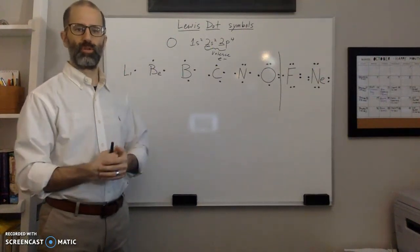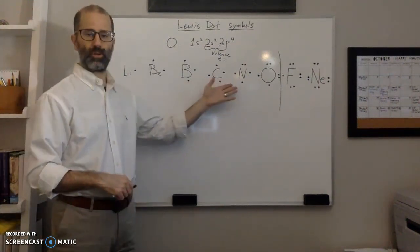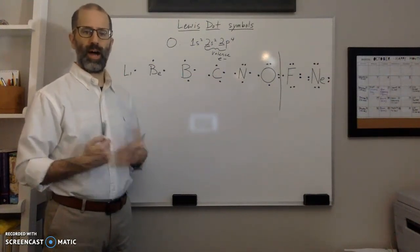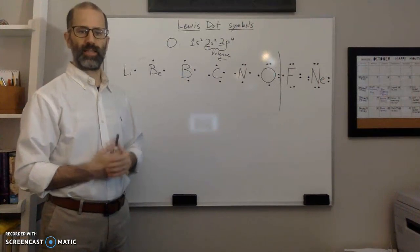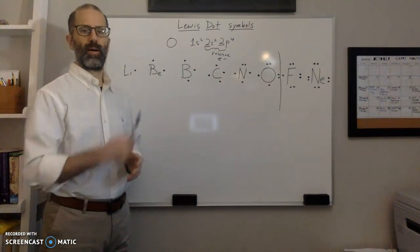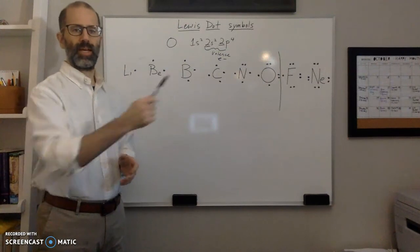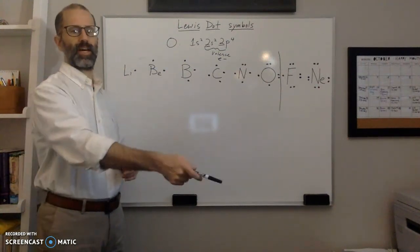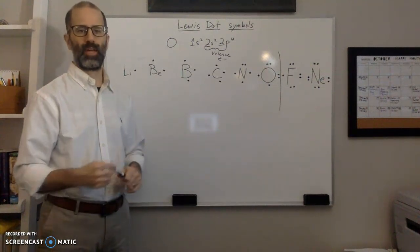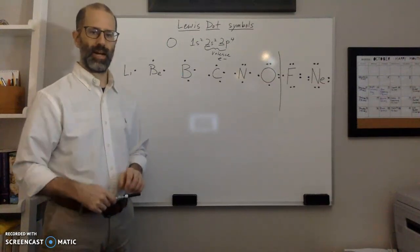If you know what group an element is in, you know how many valence electrons it has, and then you know how to draw its Lewis dot symbol. I hope you found this insightful and helpful. If you like this video, share it, hit the notification bell to be notified of future videos, and hit the subscription button. Leave a comment to let me know what you think or if you have any questions. Thanks for joining me and I'll see you next time.